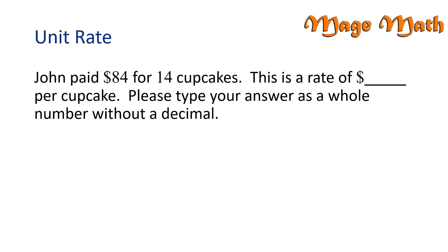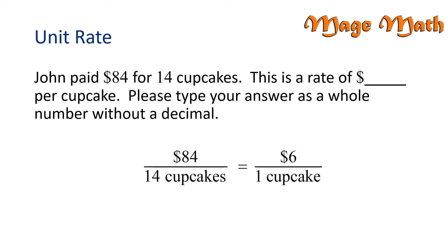John paid $84 for 14 cupcakes. This is a rate of blank dollars per cupcake. Please type your answer as a whole number without a decimal. To find the unit rate or amount of money that John paid per cupcake, we will divide $84 by 14 cupcakes. 84 divided by 14 is 6. So John paid $6 per cupcake. Those are some pretty expensive cupcakes.